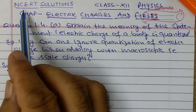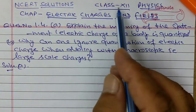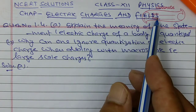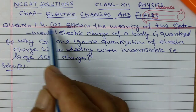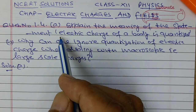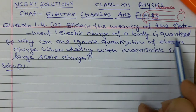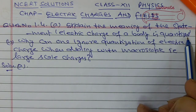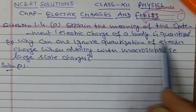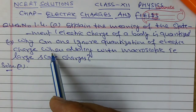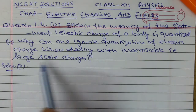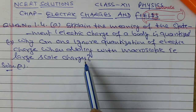Hello students. Study Solutions, Class 12 Physics, Chapter: Electric Charges and Fields. Question No. 4, Part A: Explain the meaning of the statement 'Electric charge of a body is quantized.' Part B: Why can one ignore quantization of electric charge when dealing with macroscopic, that is, large scale charges?